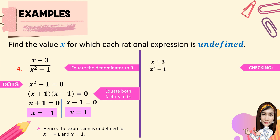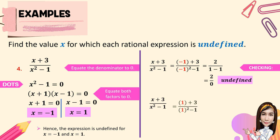To check when x equals negative 1: we substitute into x plus 3 over x squared minus 1 to get negative 1 plus 3 over negative 1 squared minus 1, which is 2 over 1 minus 1, giving 2 over 0 — undefined. When x equals 1: we get 1 plus 3 over 1 squared minus 1, which is 4 over 1 minus 1, giving 4 over 0 — undefined.